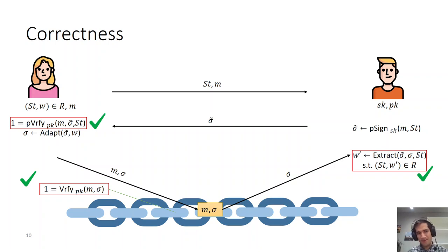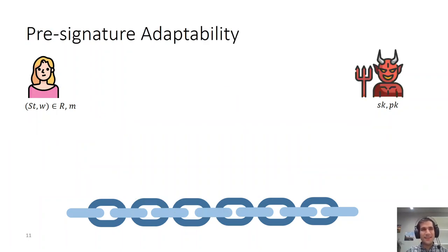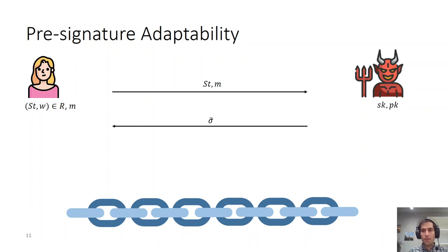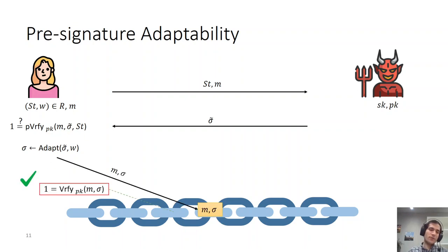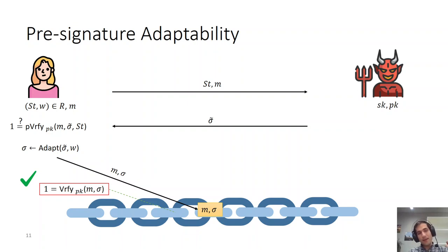A similar but slightly different property is pre-signature adaptability. Pre-signature adaptability is the situation where Alice is honest, but Bob might be malicious. Alice sends a statement and message to Bob. Bob generates a pre-signature, but he may actually deviate from the algorithm which generates the pre-signature. We want that if the pre-signature is valid and Alice adapts it to a full signature, the resulting full signature is valid. So Bob cannot cheat by generating a valid pre-signature which cannot be adapted to a valid full signature. This is a guarantee for Alice — she wants to be sure that when getting a valid pre-signature, she would actually be able to use it to get a valid signature.